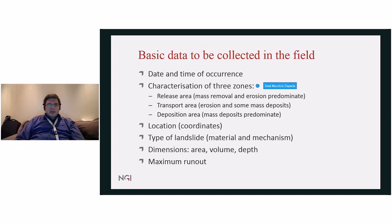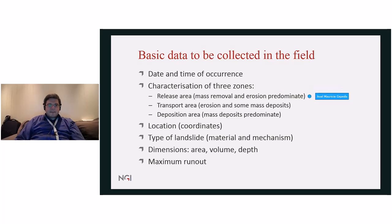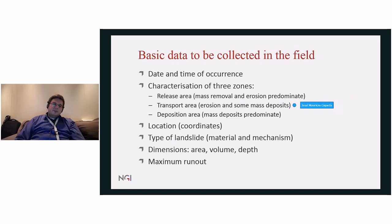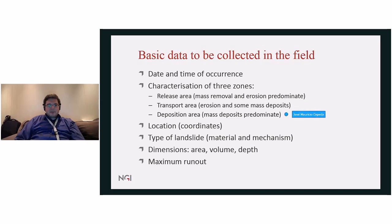Then we need to characterize the landslide into three zones. We characterize the release area, where mass removal and erosion predominate — the uppermost part of the landslide. Then the transport area, where we have some erosion and some mass deposits. And finally, the deposition area in the lowest part, where there is a predominance of mass deposition.